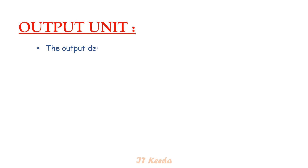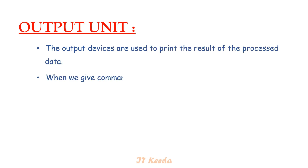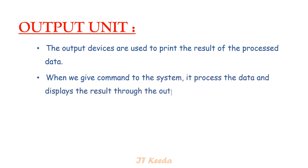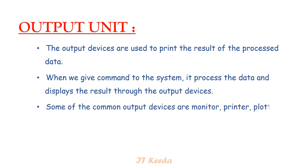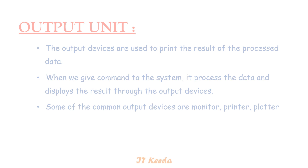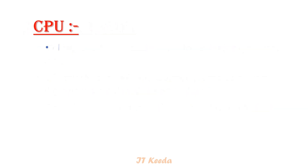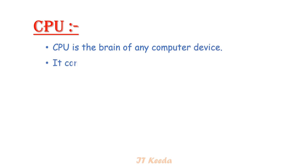The output devices are used to print the result of the processed data. When we give a command to the system, it processes the data and displays the result through the output devices. Monitor, printer, and plotter are some examples. Now let's talk about the CPU — it is the brain of any computer device. It has three units.